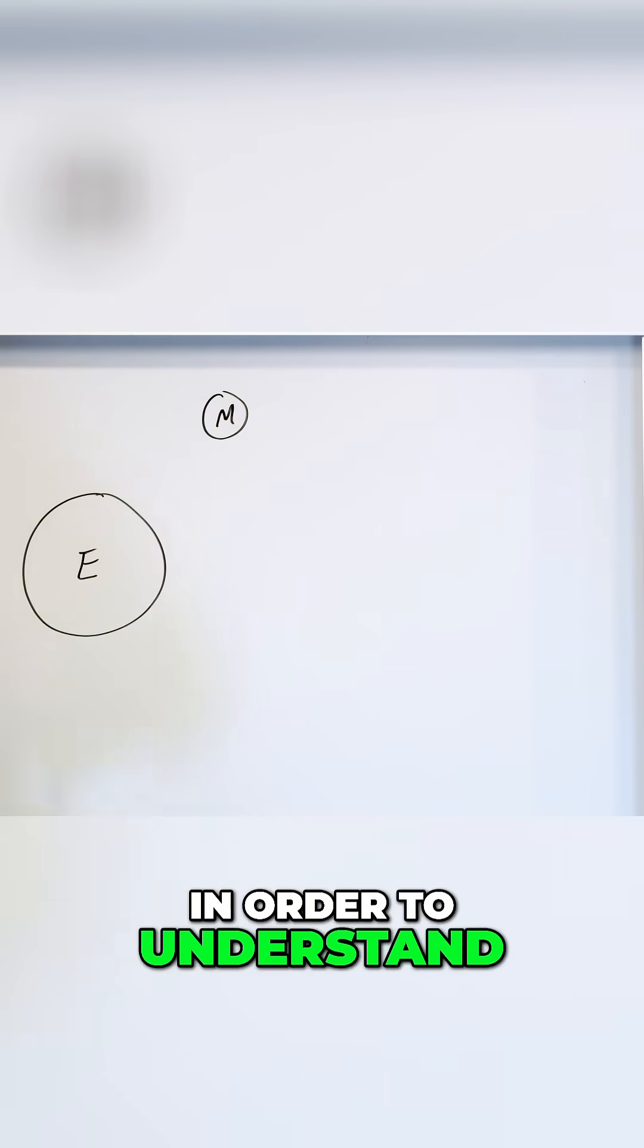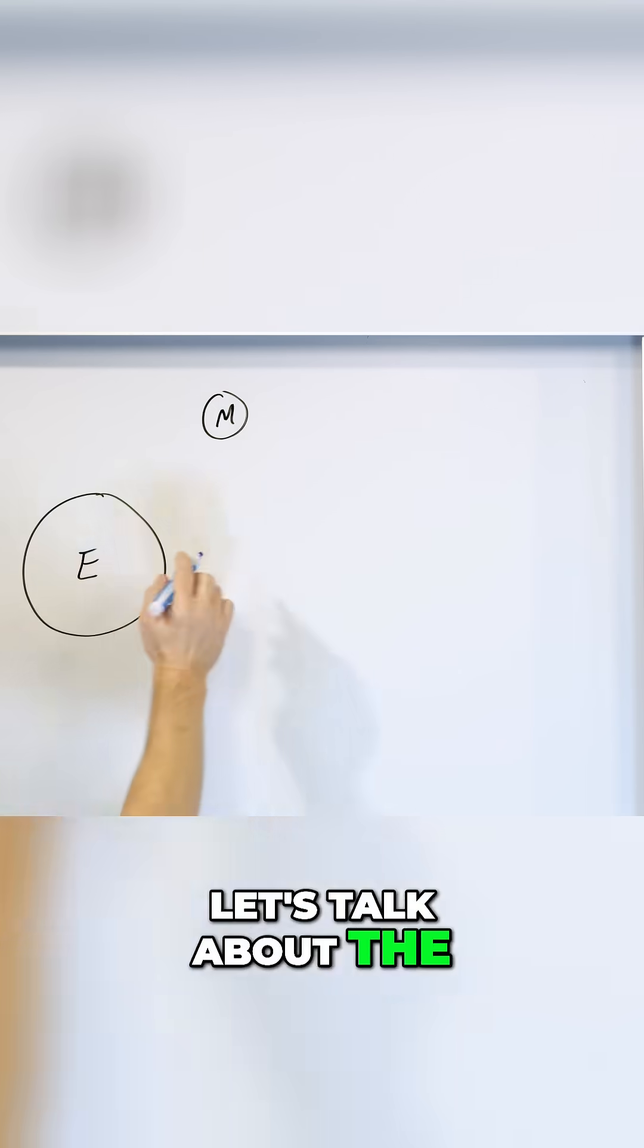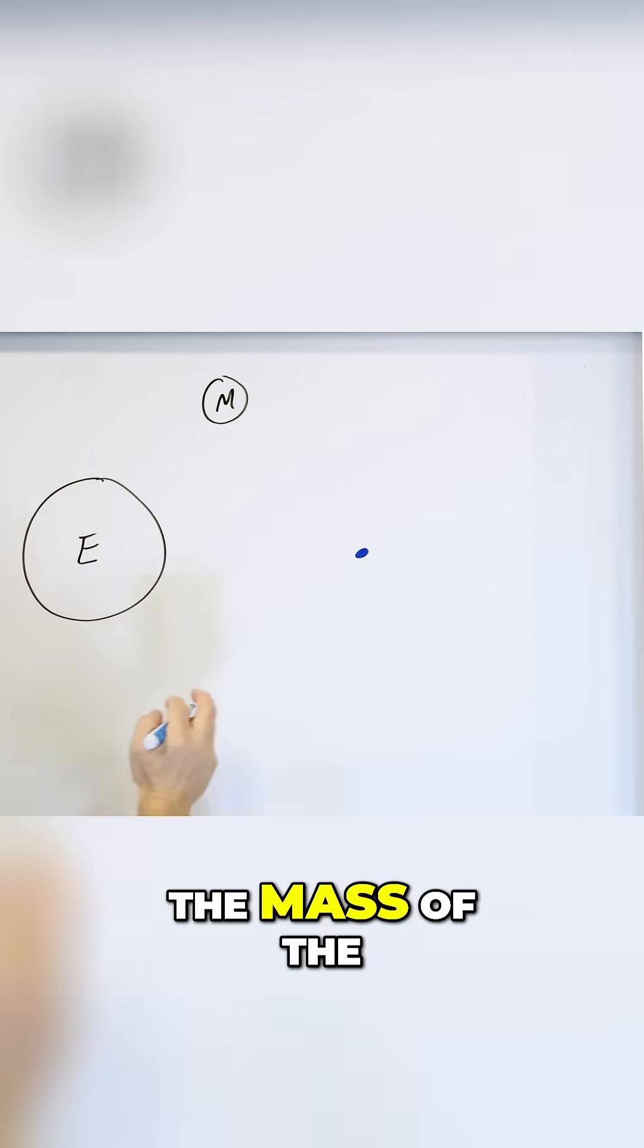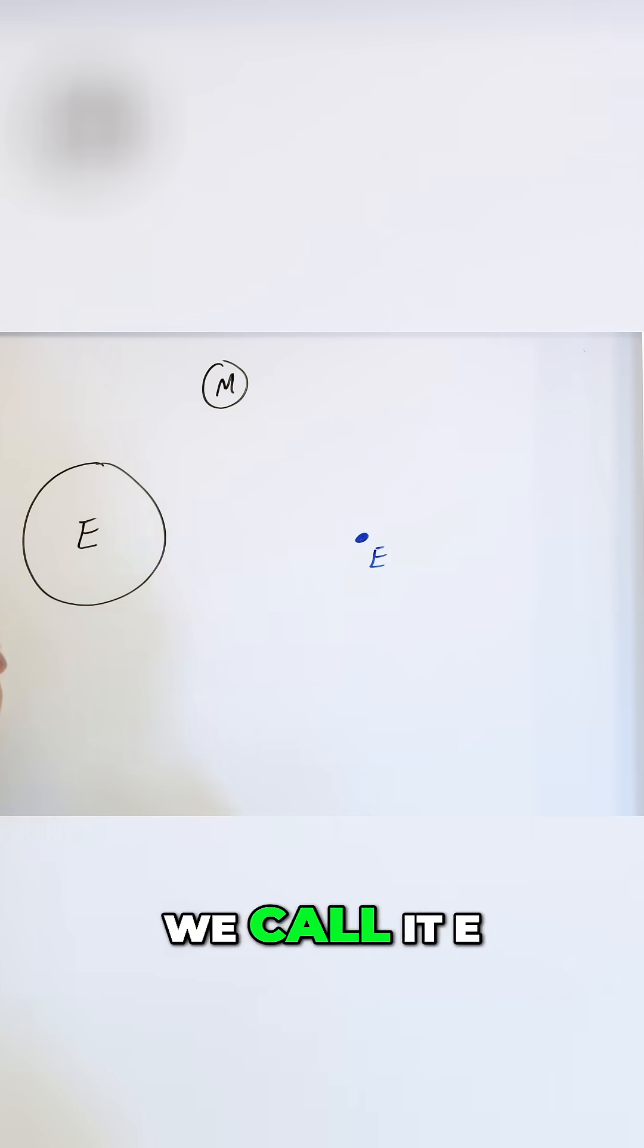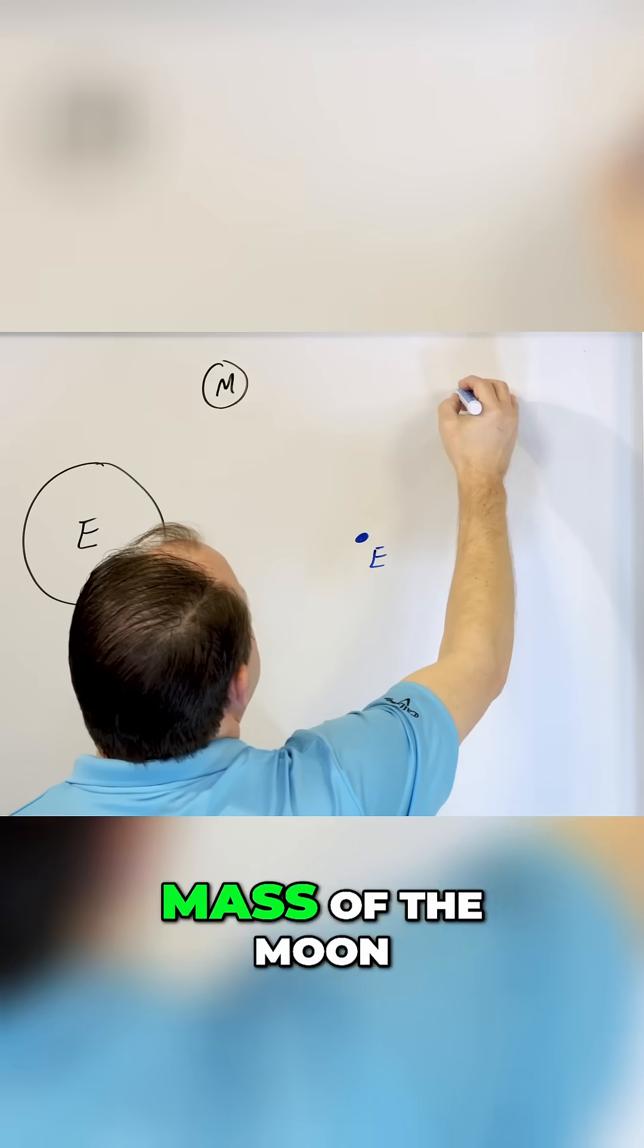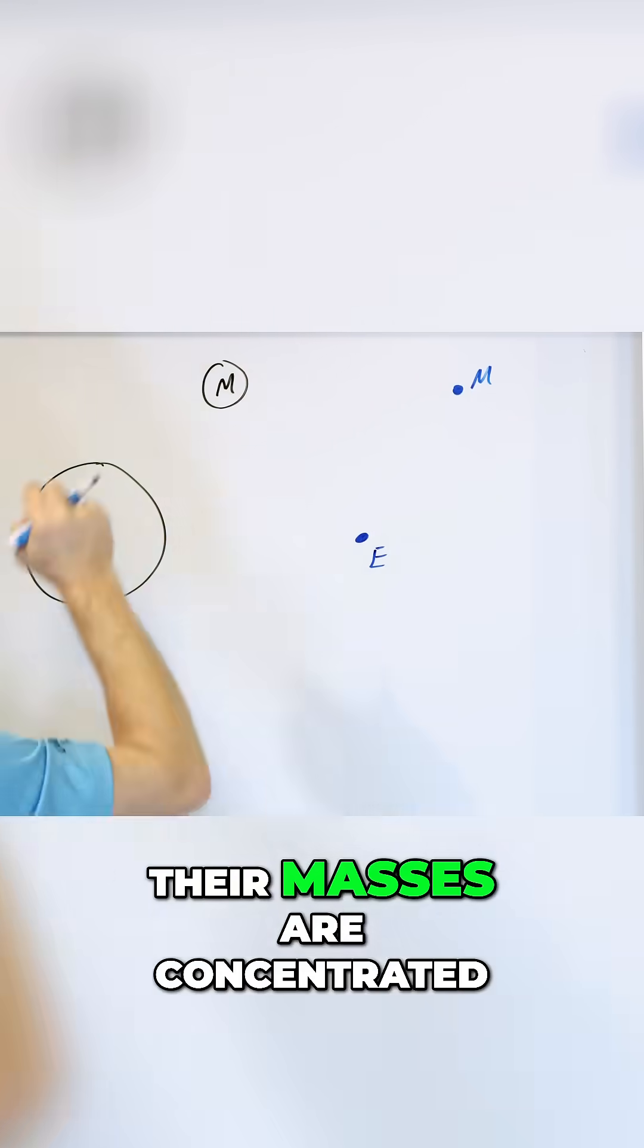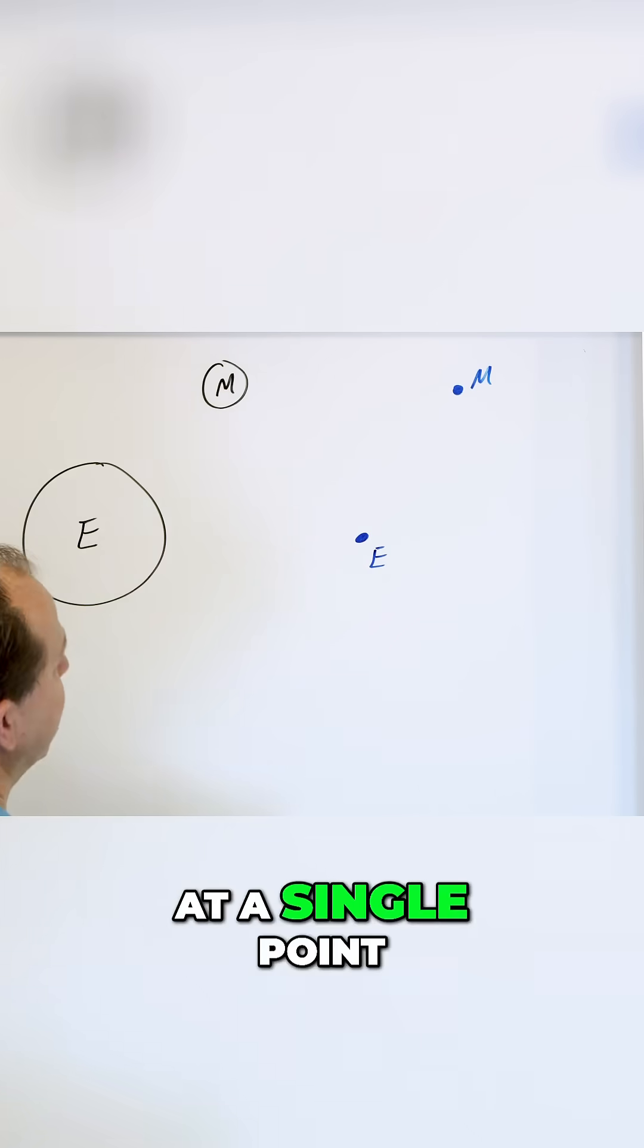Now, in order to understand this a little bit more, let's talk about the Earth as if it were a single point. So we concentrate the mass of the Earth into a single point, we call it E, and we concentrate the mass of the Moon to a single point, we call it M, because we can treat these planets as if their masses are concentrated at a single point.